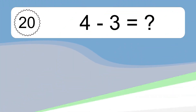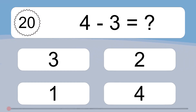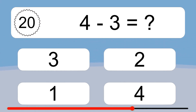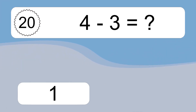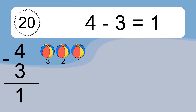4 minus 3 equals what? 4 minus 3 equals 1. Let's count it. 3, 2, 1.